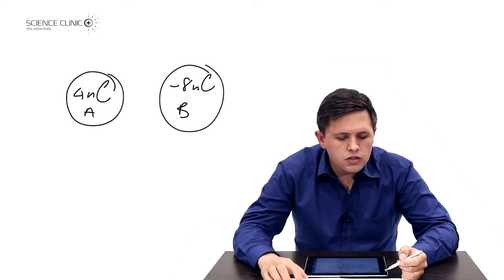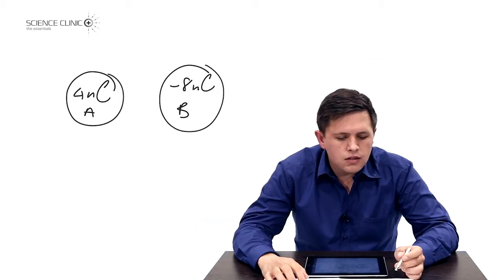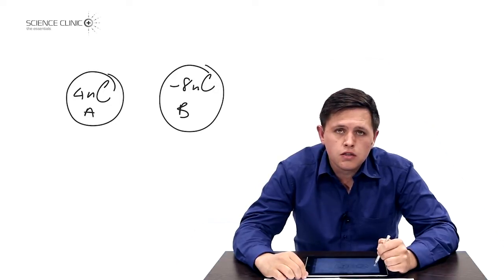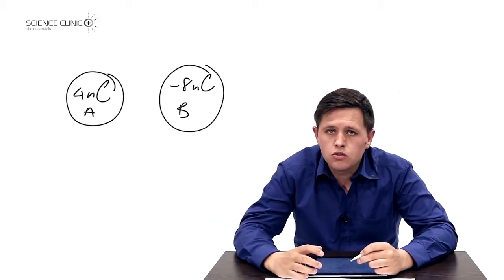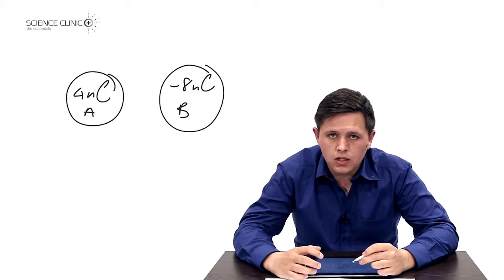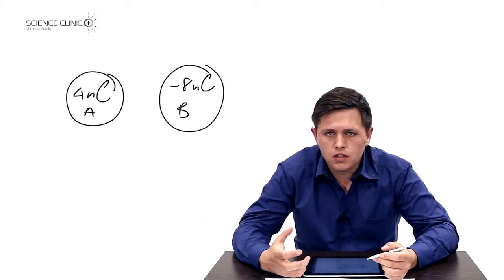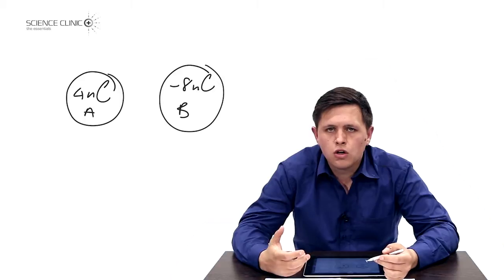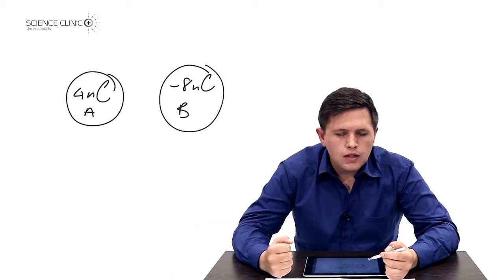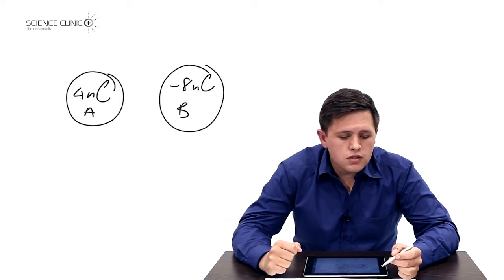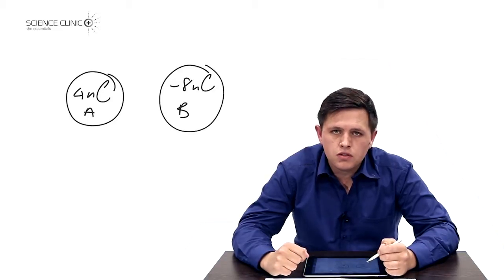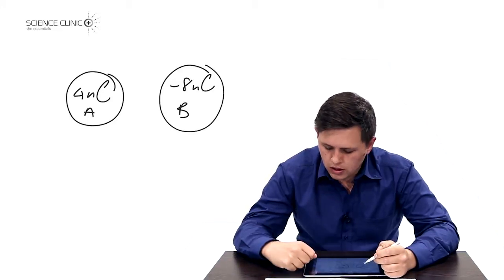The question says these spheres are brought close together so that they touch — brought into contact with one another. When they're in contact they will transfer electrons. They are then separated, and the question asks what the charge on each sphere would be after separation, so we need to calculate the new charge.